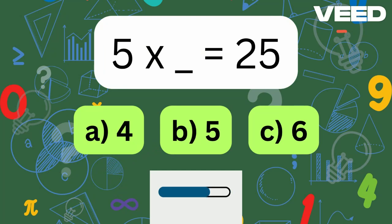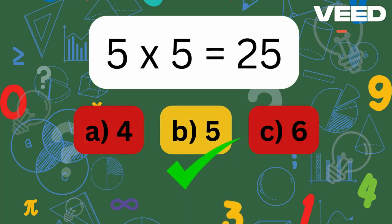5 times what equals 25? Well done, 5 times 5 equals 25.